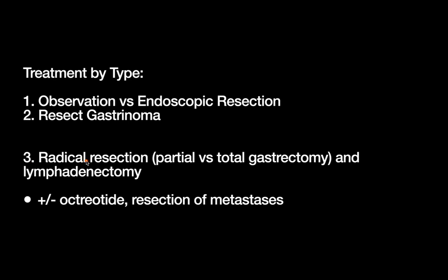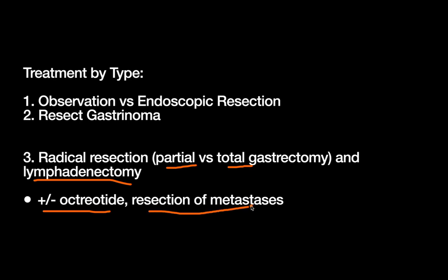Type 3, on the other hand — remember, this is real cancer — is going to get a real cancer operation. These patients will need a radical resection with a partial or total gastrectomy, depending on tumor size and location, and an associated lymphadenectomy. If adjuvant therapy is needed, remember this is like any other neuroendocrine tumor of the intestines — you can treat with octreotide. If metastases are symptomatic and resectable, surgical resection, especially of liver metastases, can also be considered.